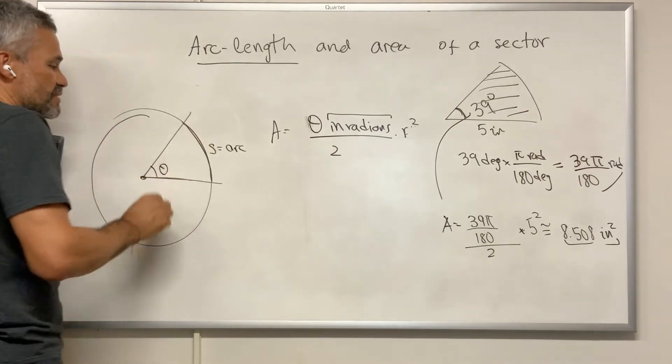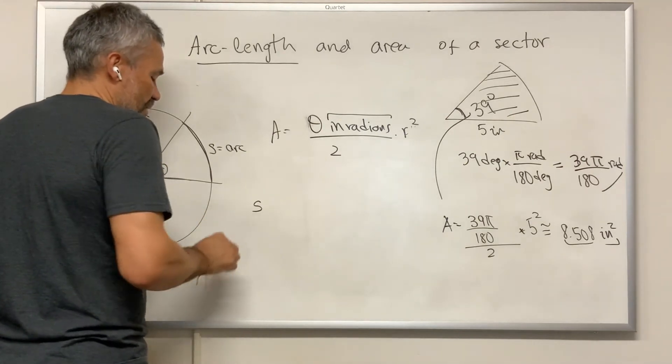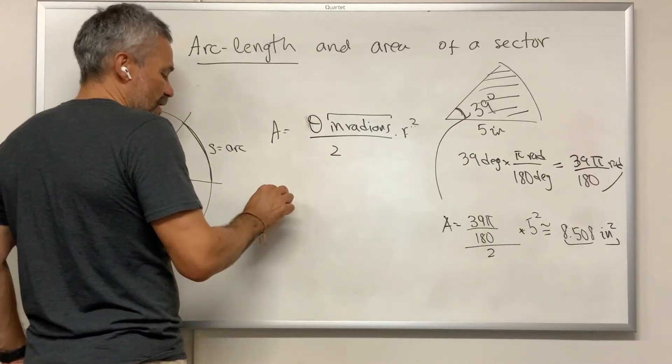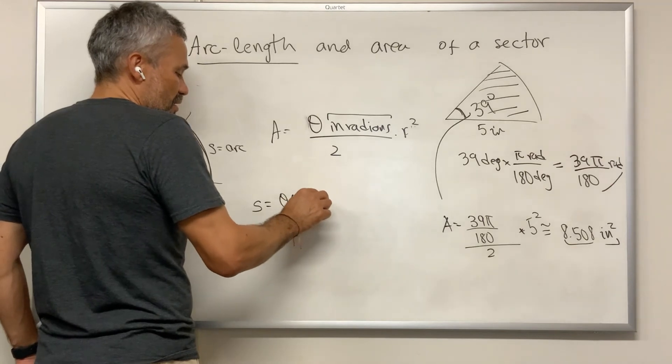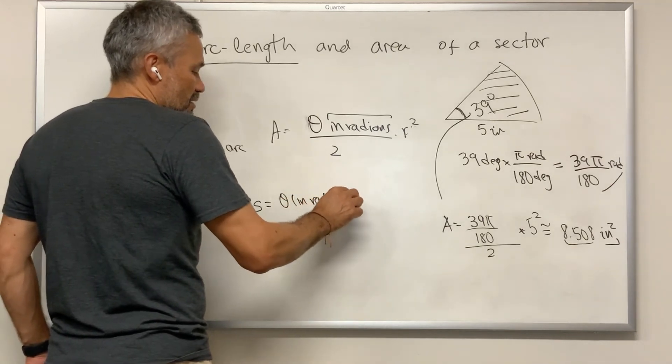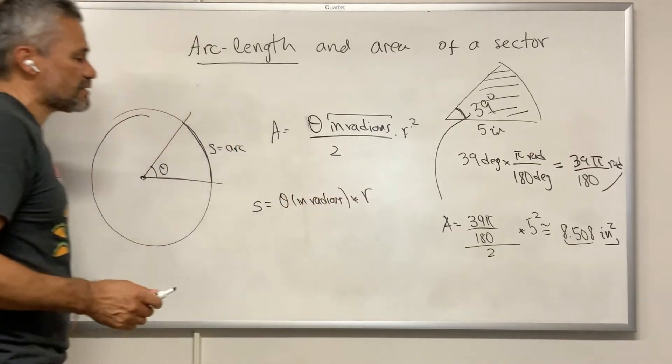Arc. Let's suppose that we have this distance. Then the distance is just the angle in radians times r. That's just the formula.